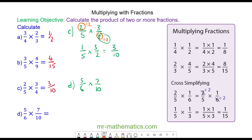For question D, we can divide the five and the ten by five. The six and the seven have no common factors, so we have five divided by five over six, multiplied by seven over two, which gives us seven twelfths.